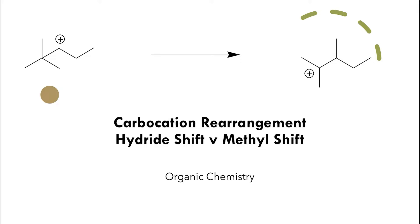Carbocation rearrangement is very common in organic chemistry. There are two types of carbocation rearrangement: hydride shift and methyl shift. In this video, I'm going to explain the difference between these two and what will drive this type of rearrangement.